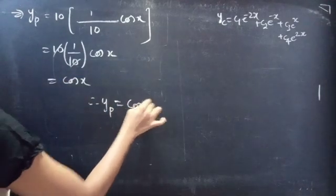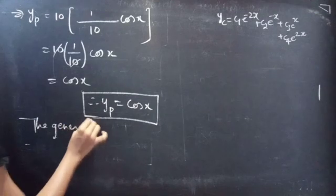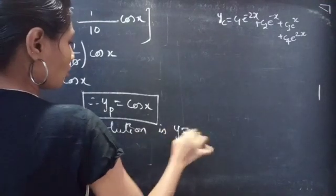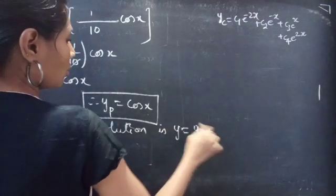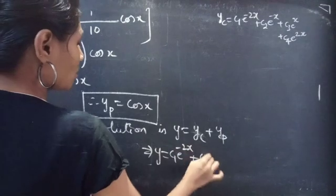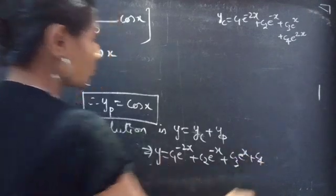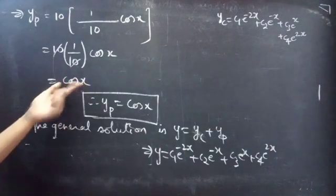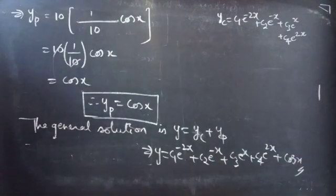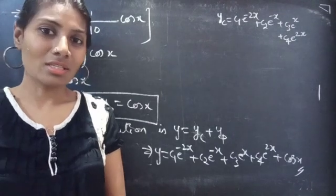Therefore, yp = cos x. Now let's write the general solution. The general solution is y = yc + yp = c₁e^(−2x) + c₂e^(−x) + c₃e^x + c₄e^(2x) + cos x. This is the required solution. We have seen a problem from higher order linear differential equations in this video. Hope you understand. See you in the next video.